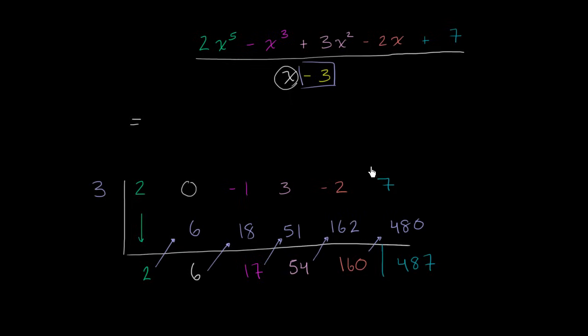But then we have our final answer. Let me work it backwards. So I'll start with our remainder. So our remainder is 487, and it's going to be 487 over x minus 3. And so this is our constant term. So you're going to have plus 160, plus 487 over x minus 3.